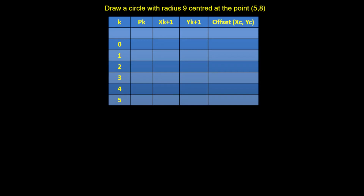In this video we're going to work through an example of using the Bresenham's circle algorithm. The problem we have is to draw a circle with radius 9 centered at the point (5, 8). I've drawn a table here and we will work through the first couple of results, then show the rest on the next page.